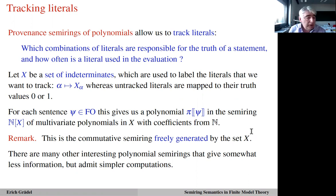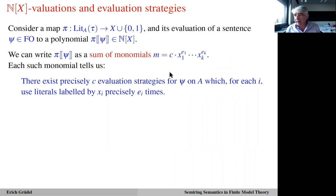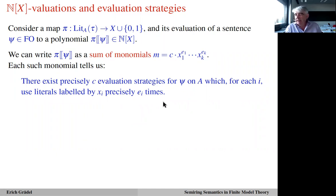Consider a map sending literals over some fixed universe and vocabulary to indeterminates or zero and one, and its evaluation of a sentence to a polynomial. We can write this polynomial as a sum of monomials. Each monomial tells us that there exist precisely c — the coefficient — many evaluation strategies of that sentence on the given universe, which use the literals labeled by these variables precisely e_i times. So each monomial tells us something about strategies: which literals the strategy uses and how often.